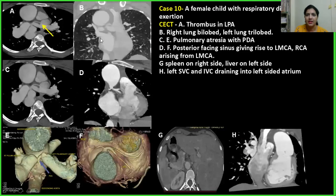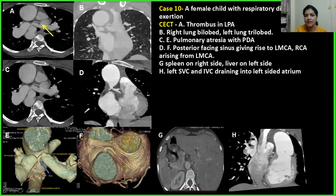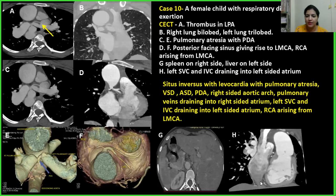Case 10: A 10-year-old female child with respiratory distress. A thrombosed LPA was seen, with pulmonary atresia and PDA. Volume rendering of this case showed a posterior-facing sinus giving origin to a single coronary, from which the LMCA originated — seen on volume rendition image. Spleen on the right side, left-sided liver, left SVC and IVC draining into the left-sided atrium. This was a case of situs inversus with other associated findings.